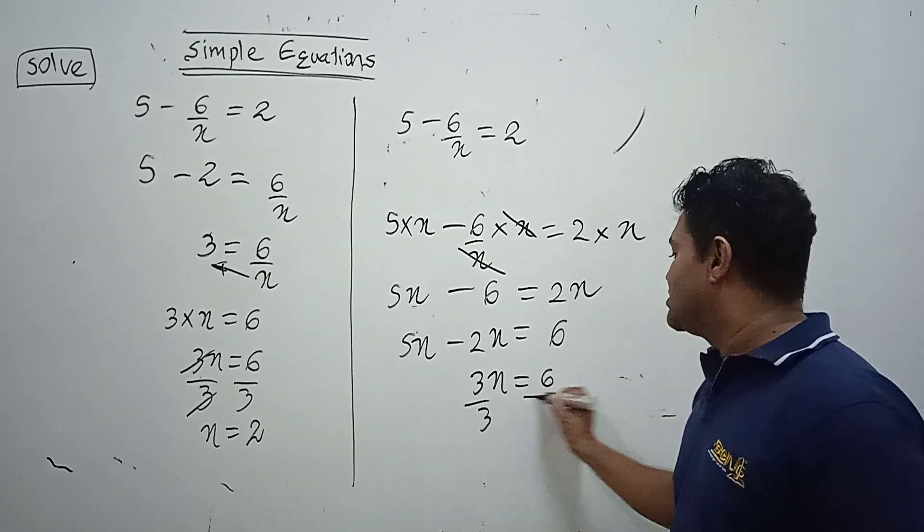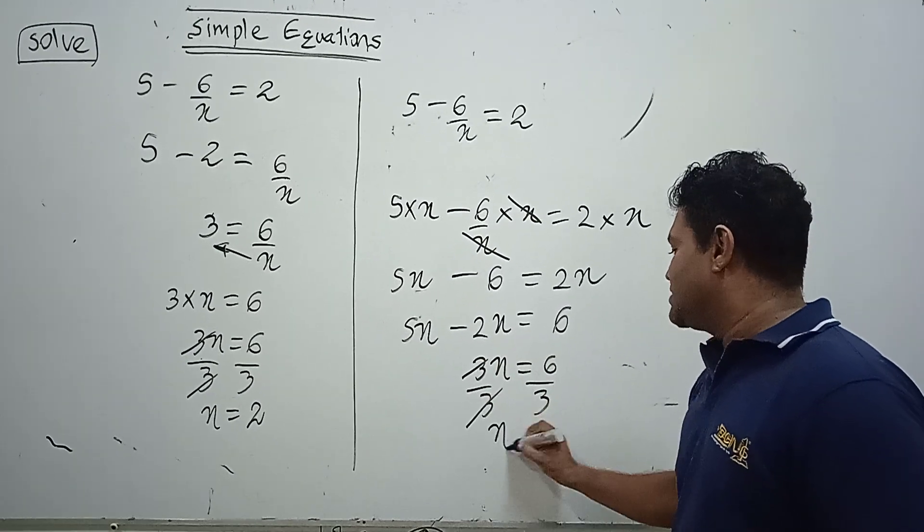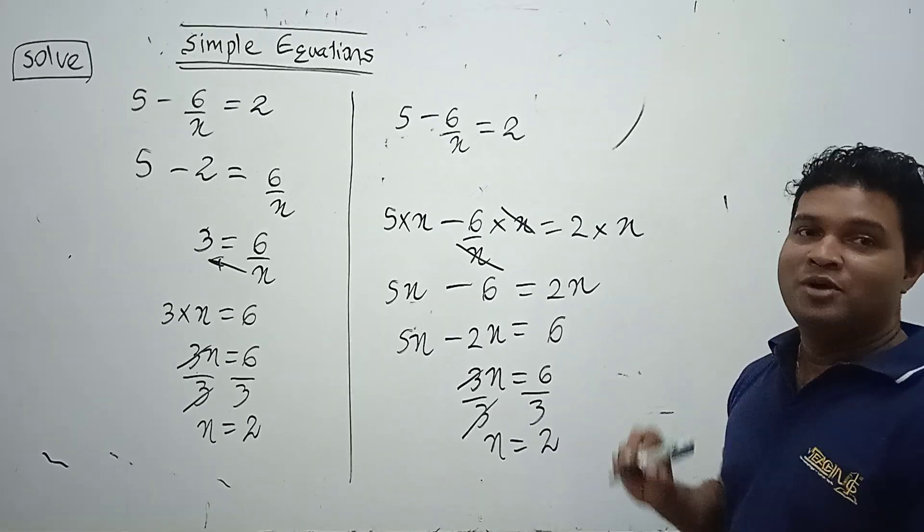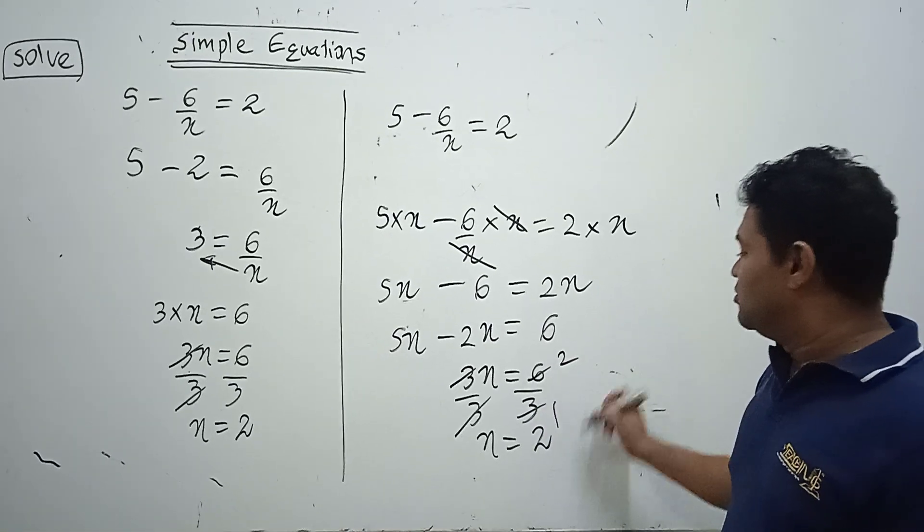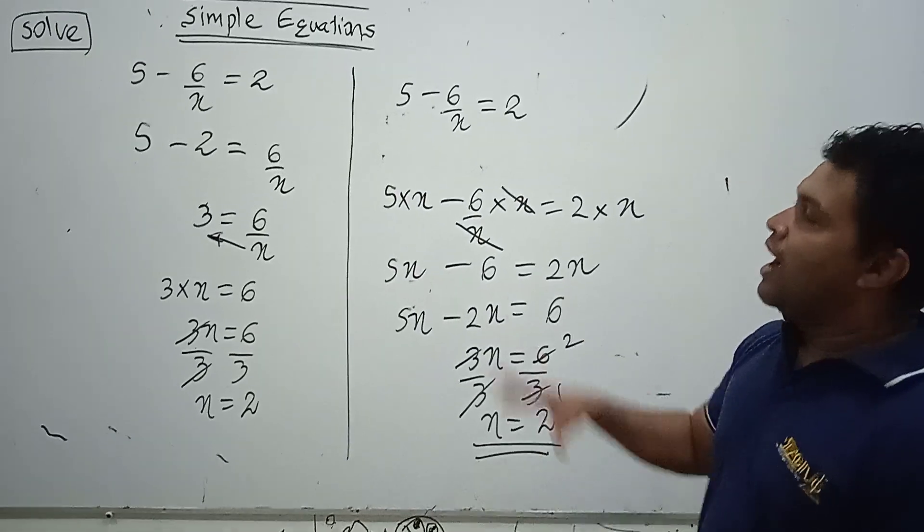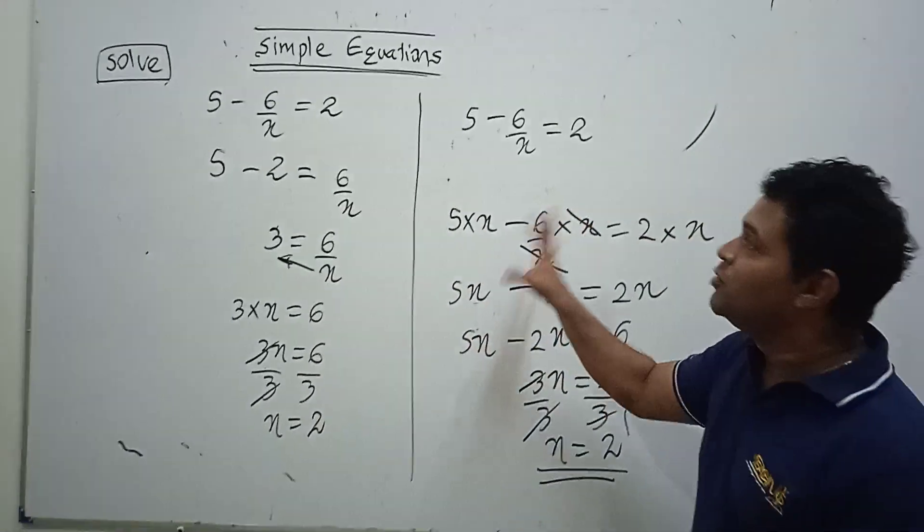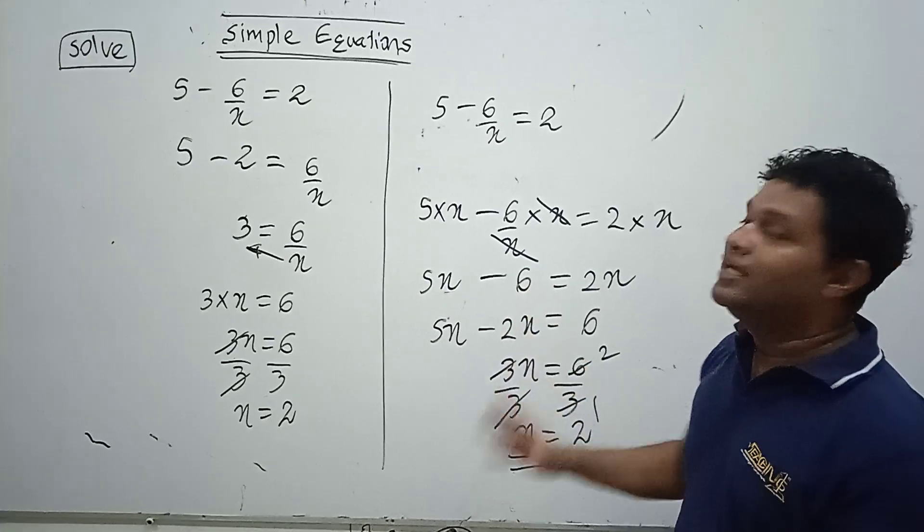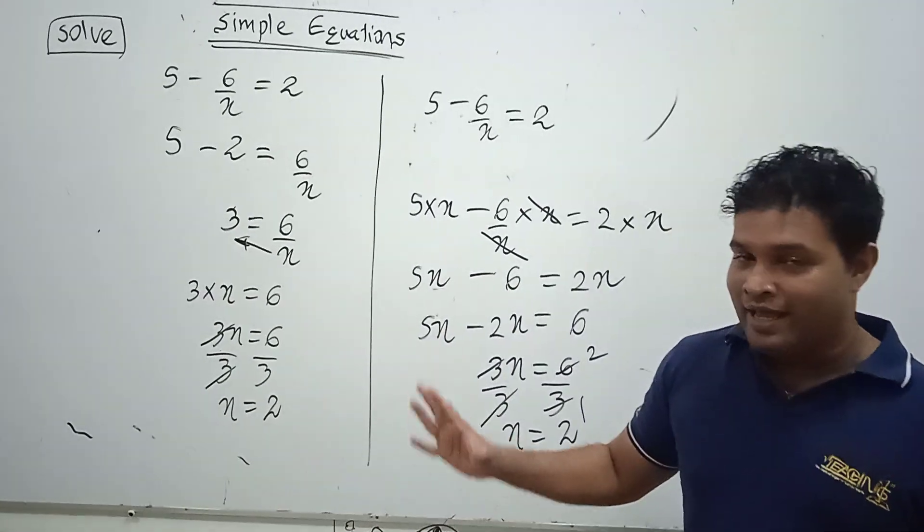Now x is how many? 3 times 2 is 6, so x equals 2. I gave you today two methods to do this problem. You can enjoy it. Okay, bye bye.